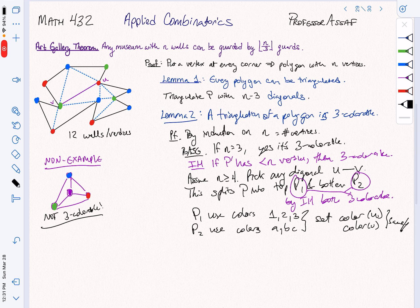So that proves the lemma. And now let's finish proving the theorem. Why n over three guards? I've just three colored it. So by the pigeonhole principle, there exists a color with less than or equal to n over three vertices of that color.